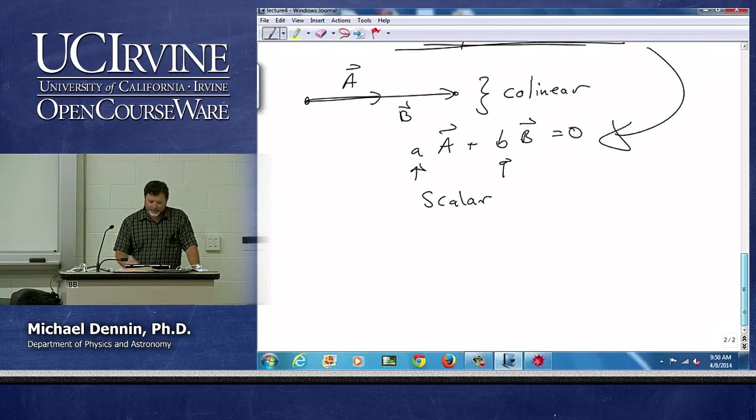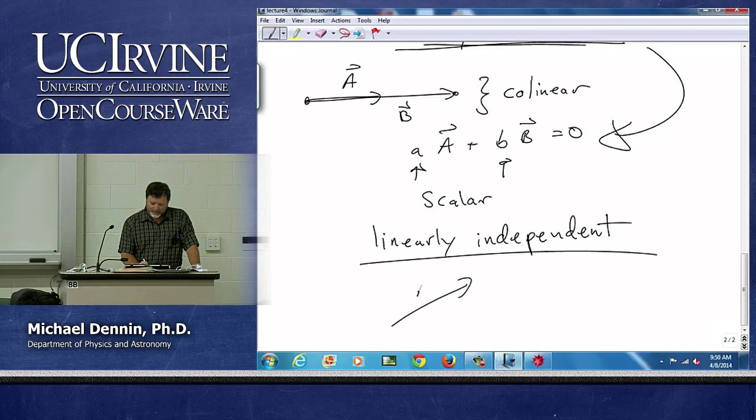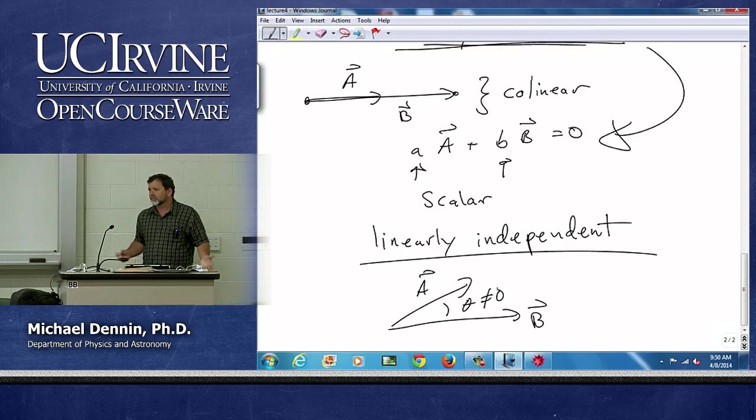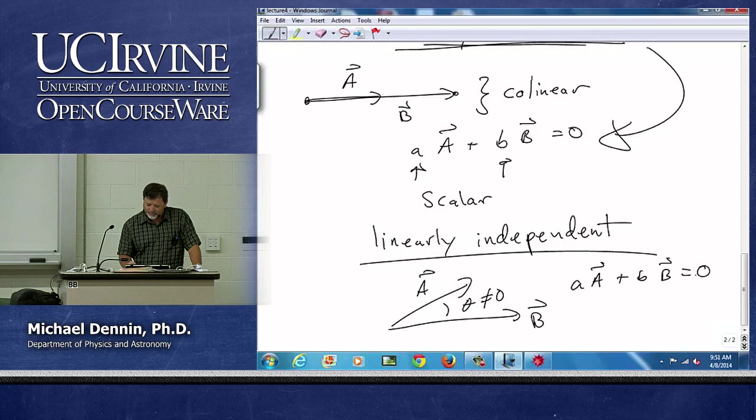Linearly independent is the thing we're more interested in when we deal with vectors. It's an idea we're going to use a lot. And in geometric vectors in the plane, it's easy to see. All I need is theta not equal to zero for two vectors. And now,